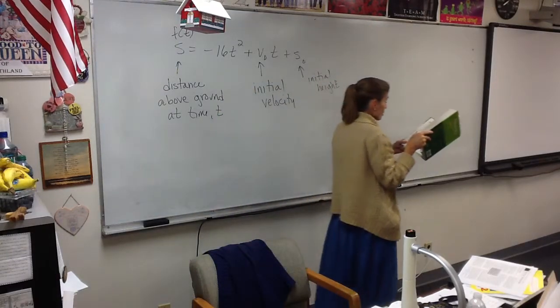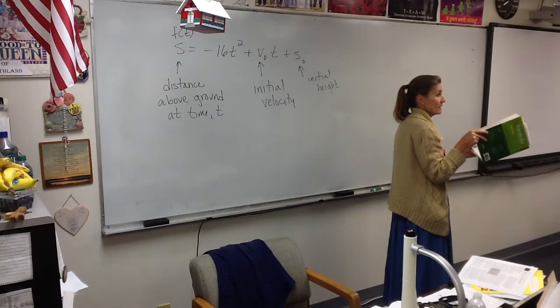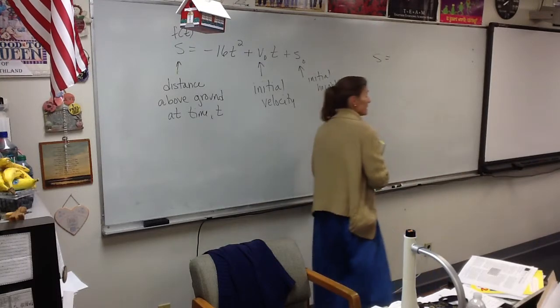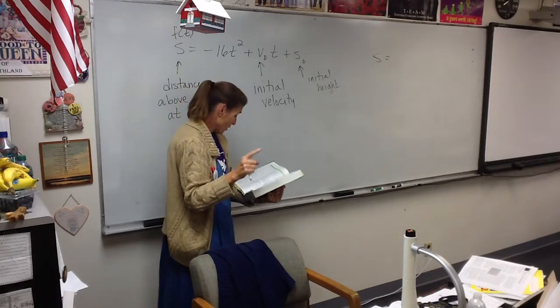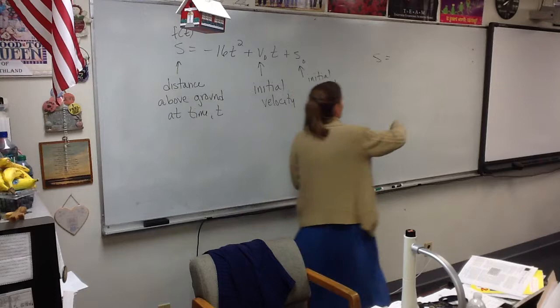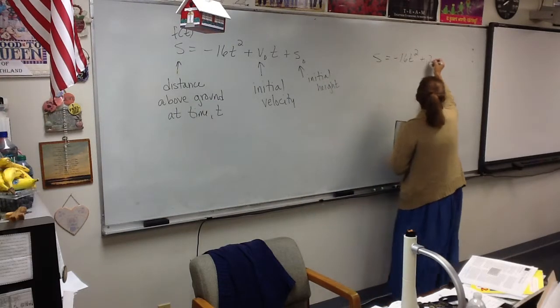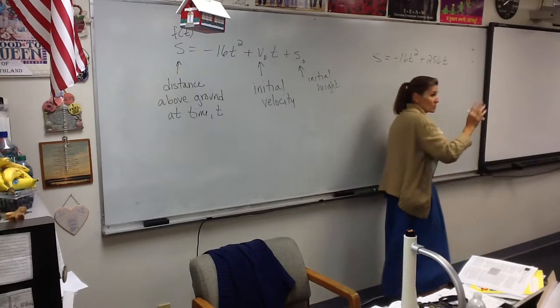It says it's launched straight up from ground level with an initial velocity of 256 feet per second. So what's that formula going to look like if it's launched from ground level with an initial velocity of 256?